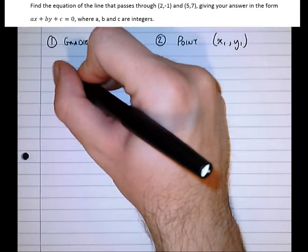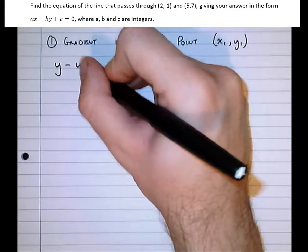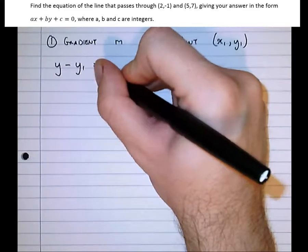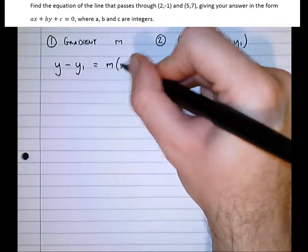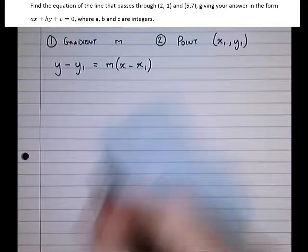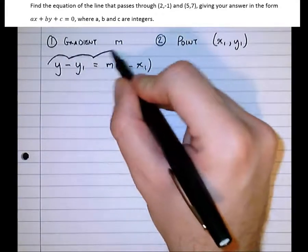When we've got these bits of information, the actual equation of any straight line is y minus y₁ equals m times x minus x₁. And that really is worth remembering.